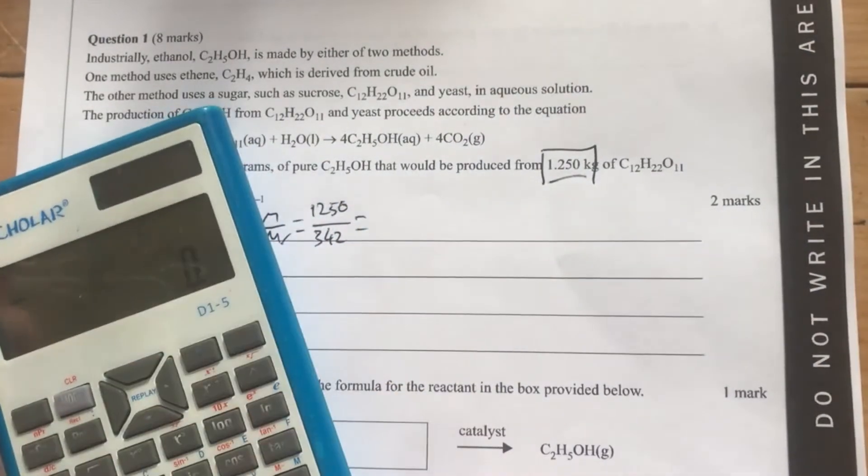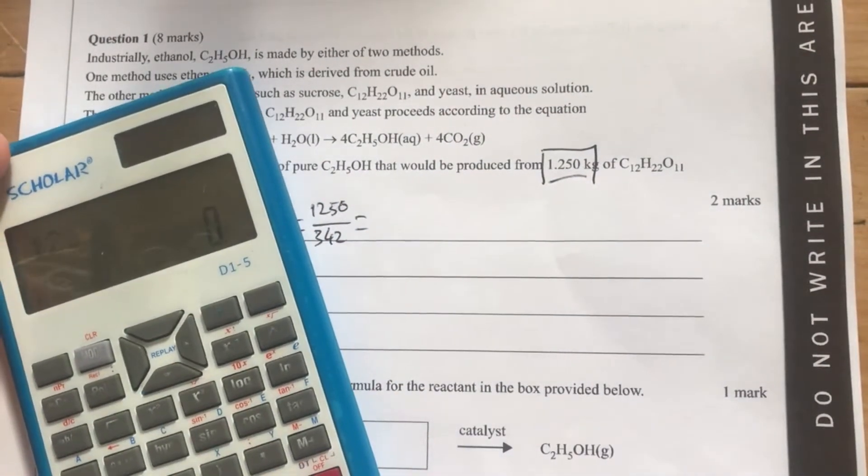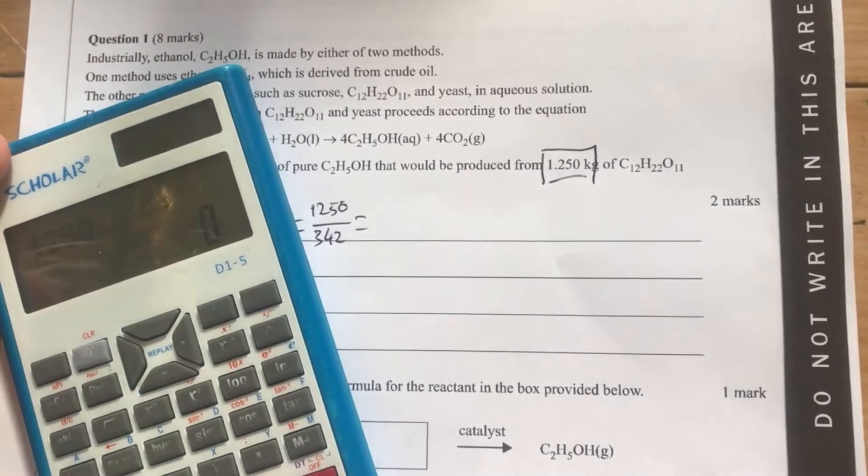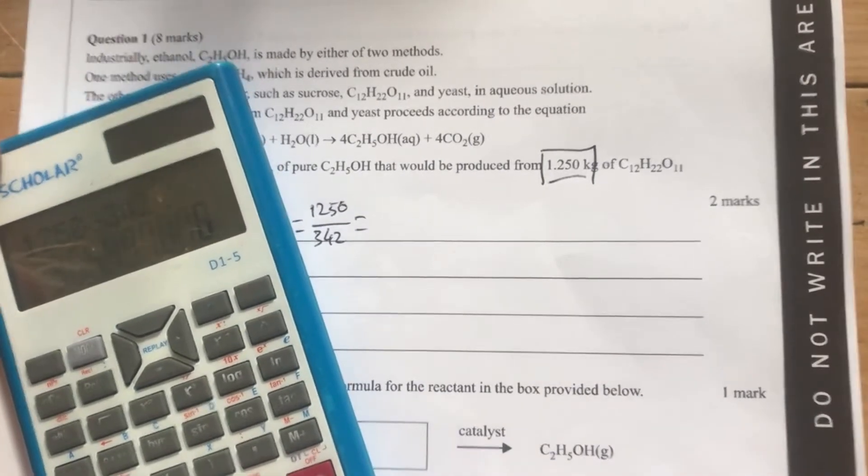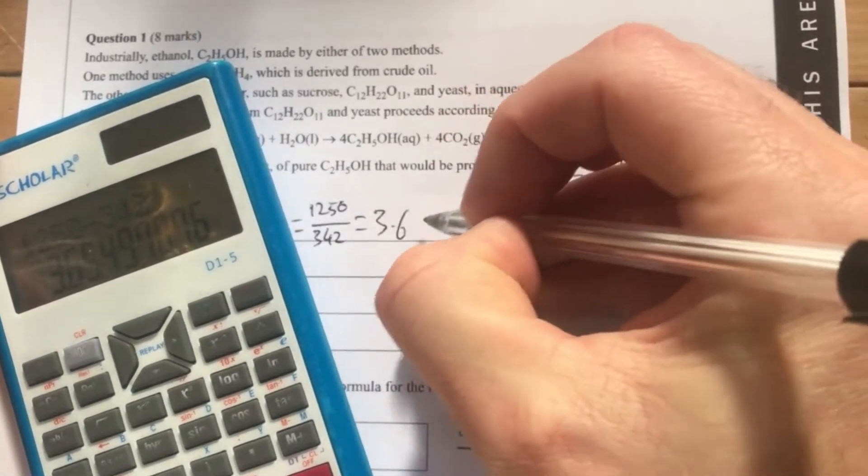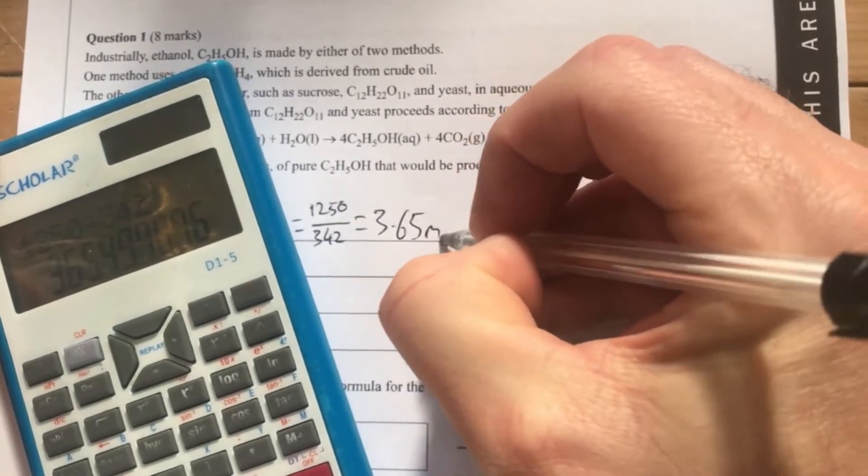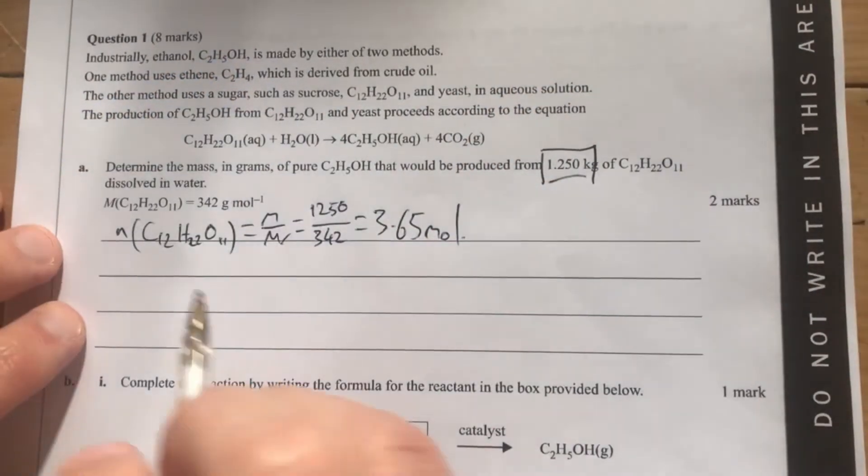So I'll work out what that actually is, which is going to be 1250 divided by 342 equals 3.65 mole. That's my number of moles of sucrose.